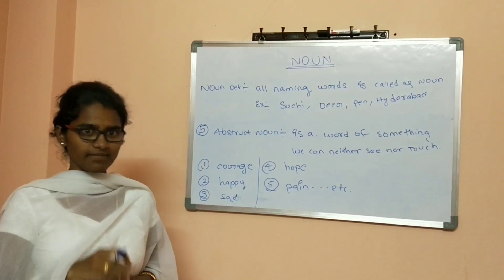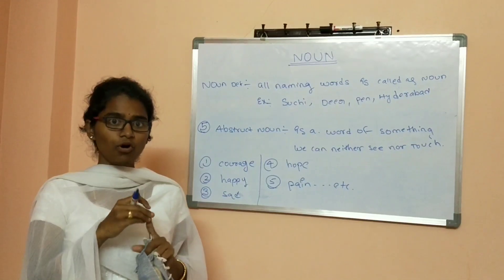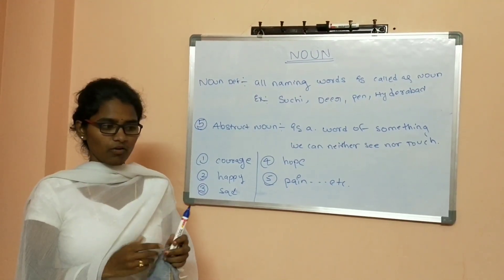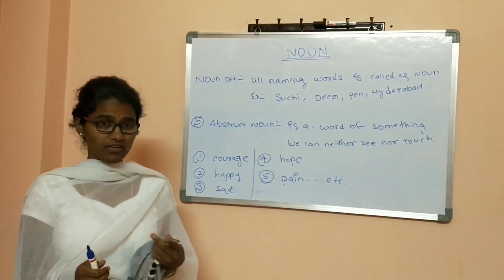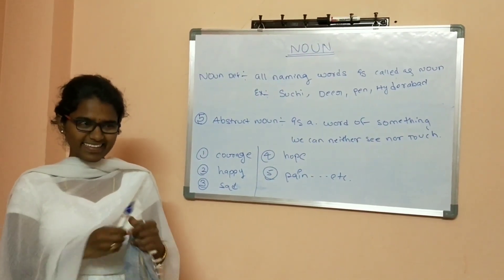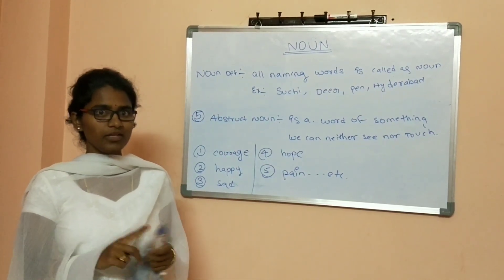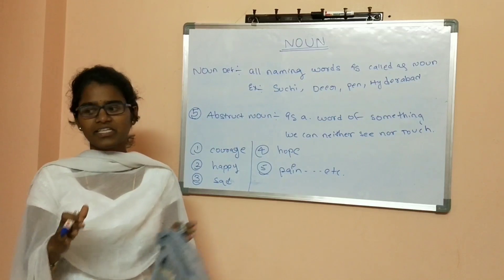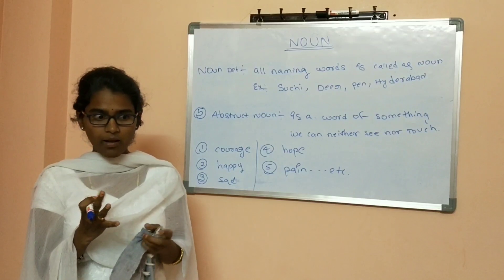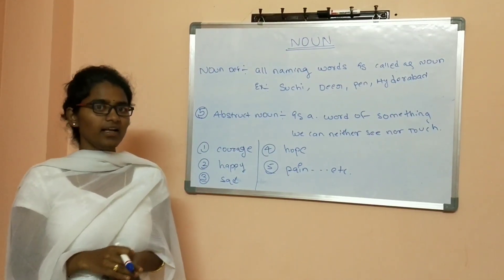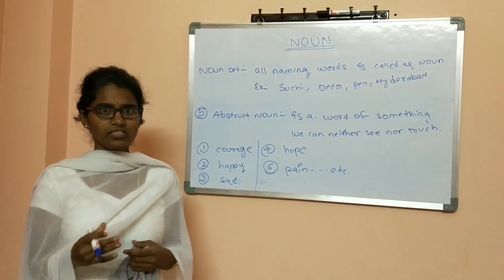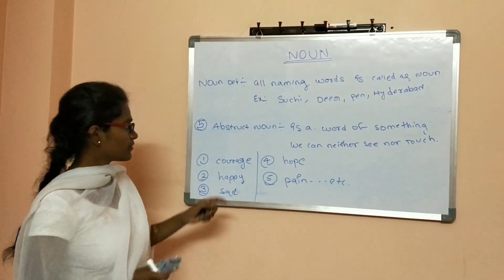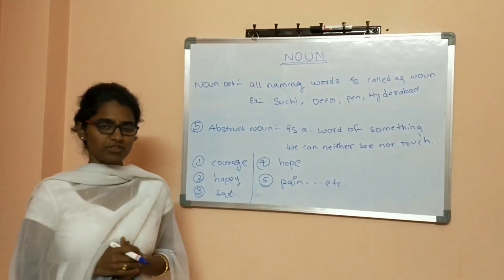Simply: a noun is a naming word, and there are five kinds of nouns. First, Proper Noun — specially indicating a particular thing, like 'it is a marker pen.' Second, Common Noun — like 'I want a pen' but you don't know which pen. Third, Collective Noun — like family, a number of people. Fourth, Material Noun — any substance from which different things can be made, like gold. Fifth, Abstract Noun — something we cannot see or touch, like hope or pain. Thanks! Next class will be on pronouns.